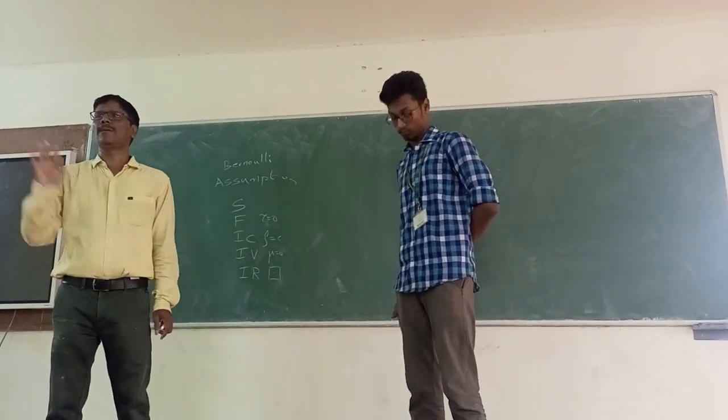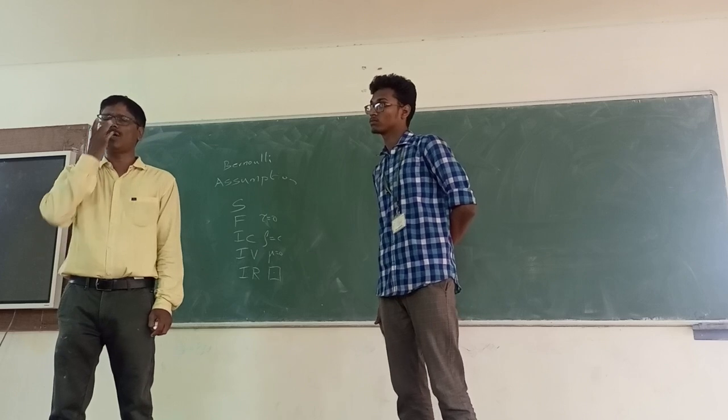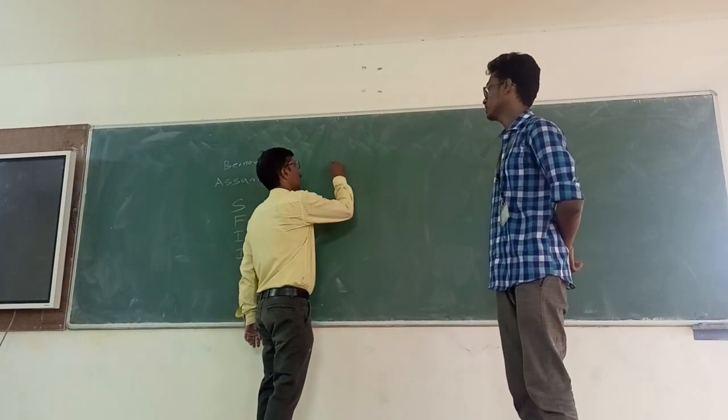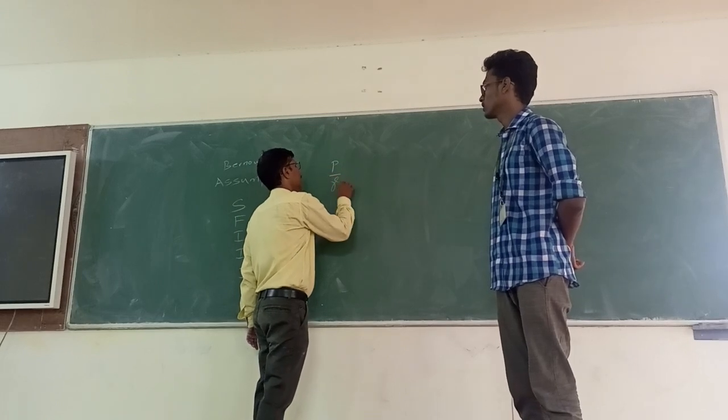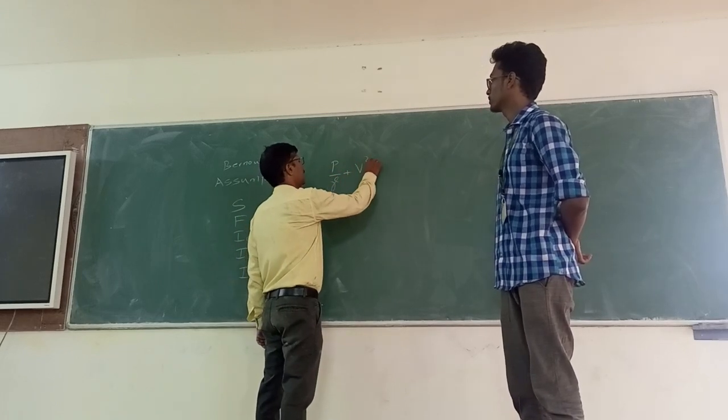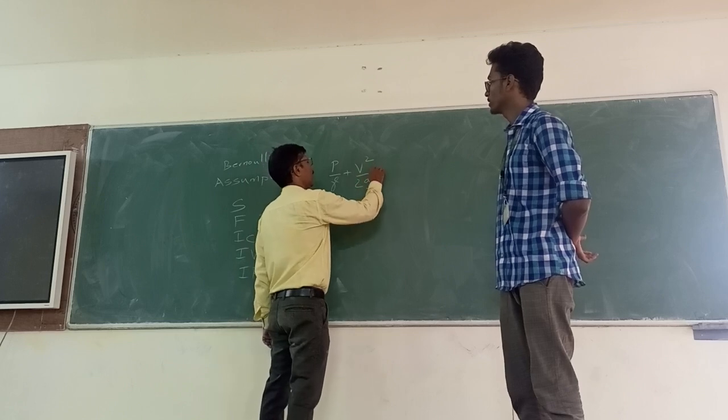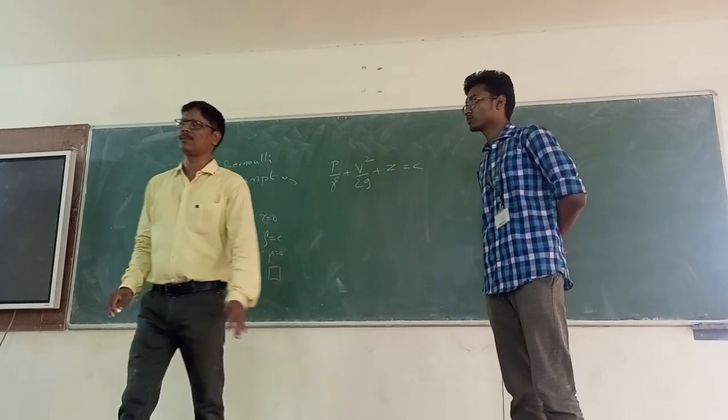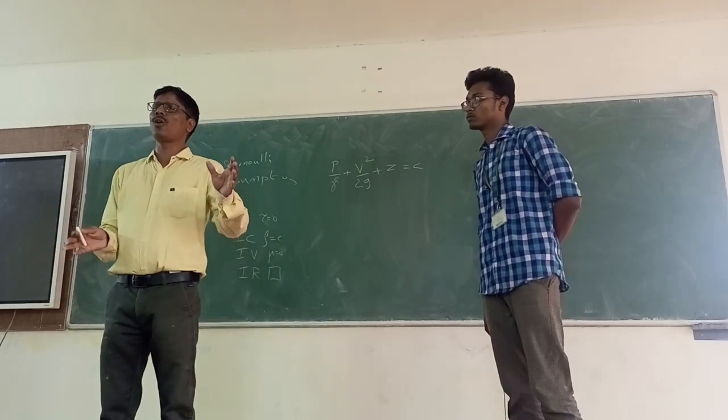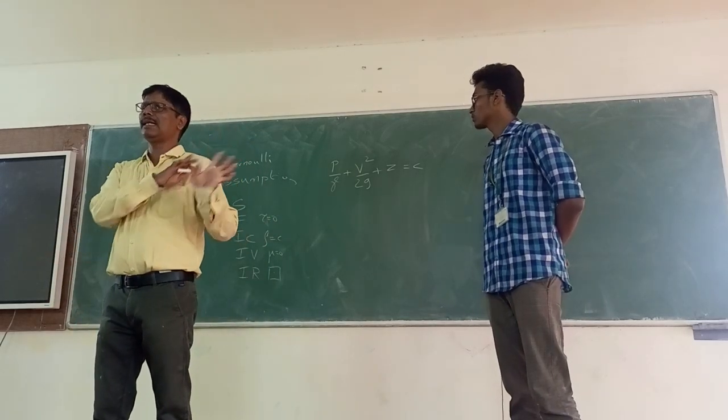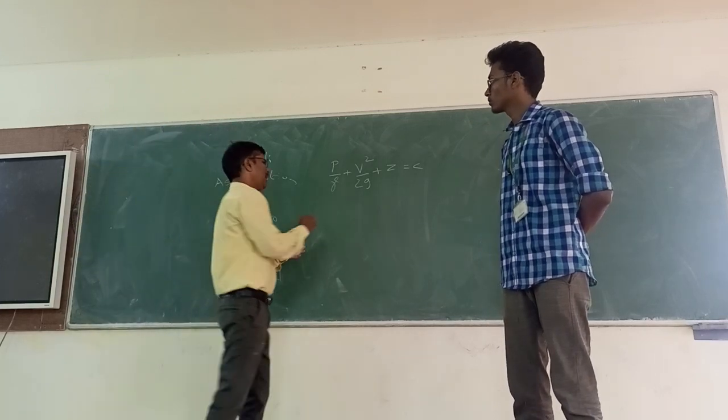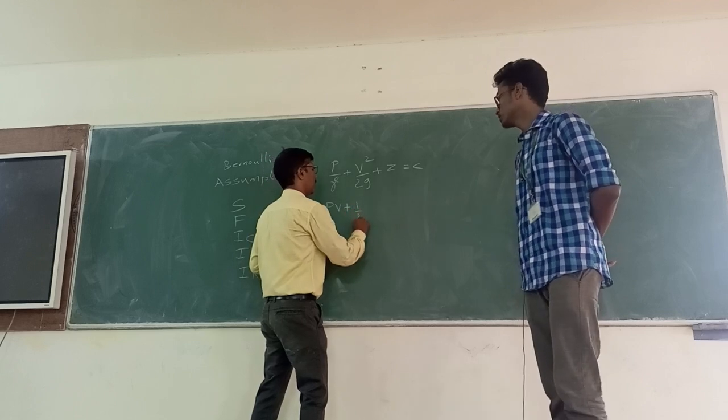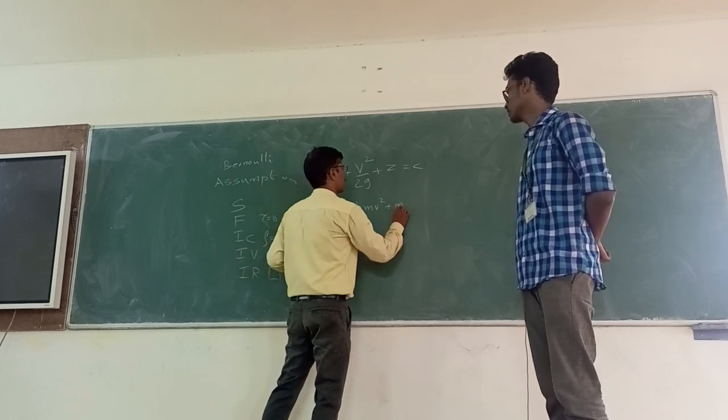So, what do we do with Bernoulli? What do we say? The flow, the sum of the pressure head and the velocity head and the datum head between any two points. This is what we say. So, in the flow, the sum of the pressure energy, kinetic energy and potential is constant. This is how we say.